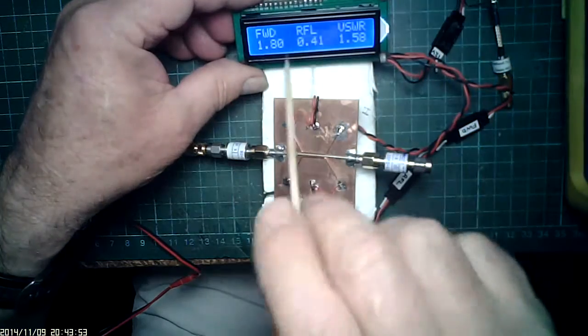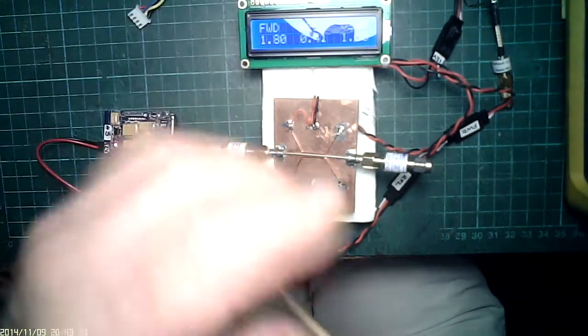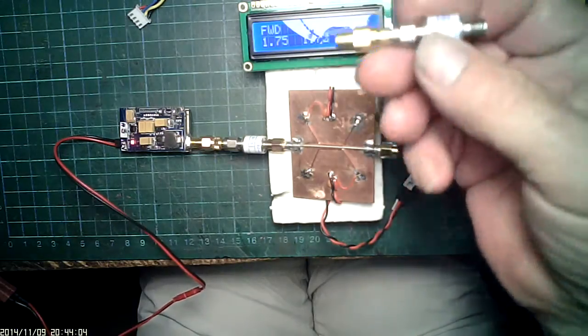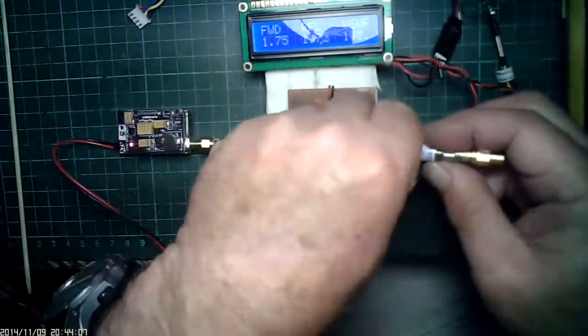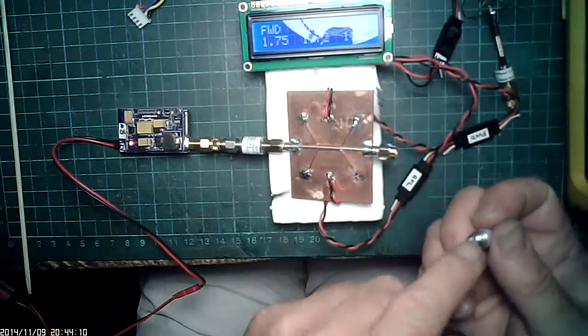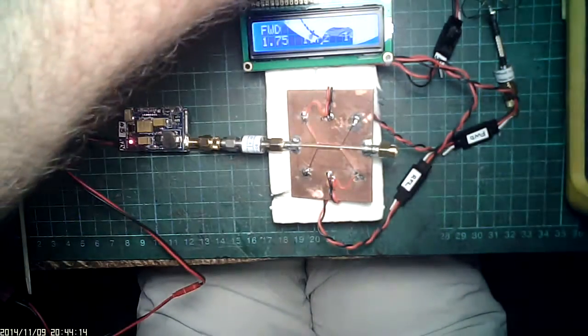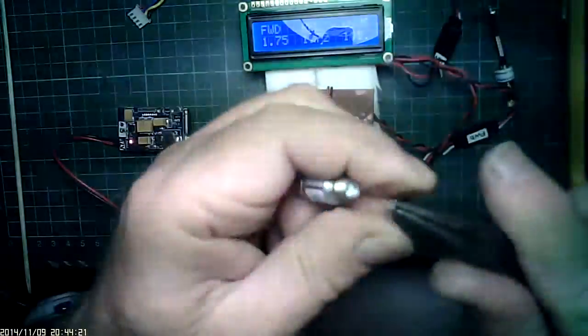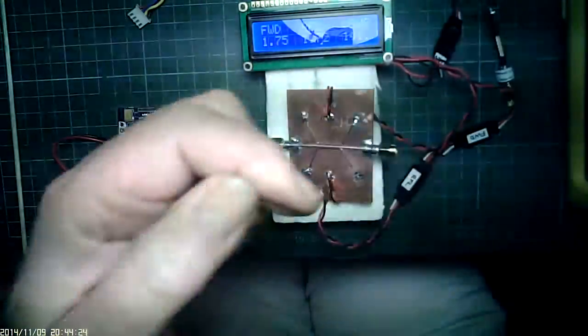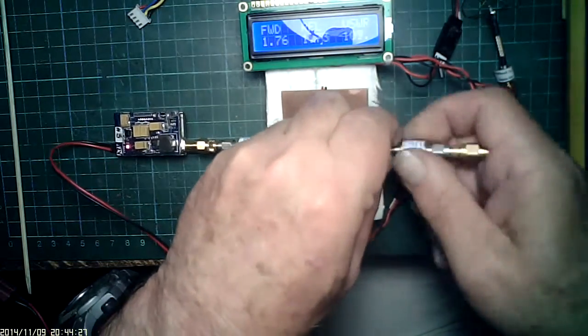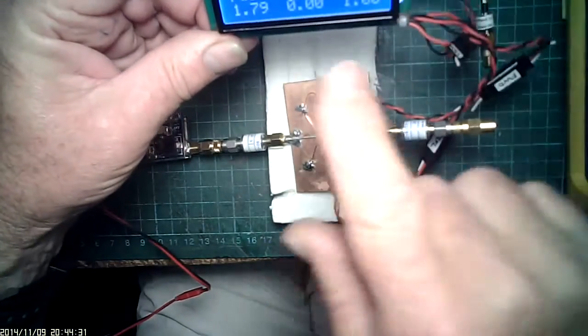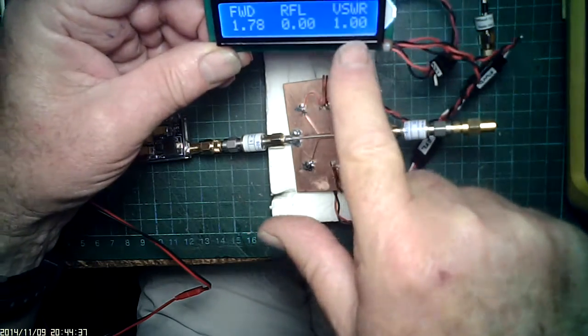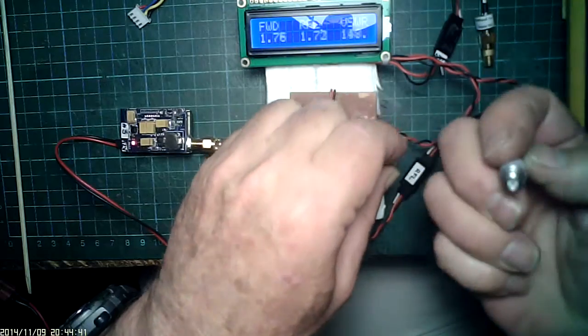Calculated 1.58, excellent. Just for kicks we'll try the termination. Forward voltage 1.79, no reflected voltage, and VSWR 1.